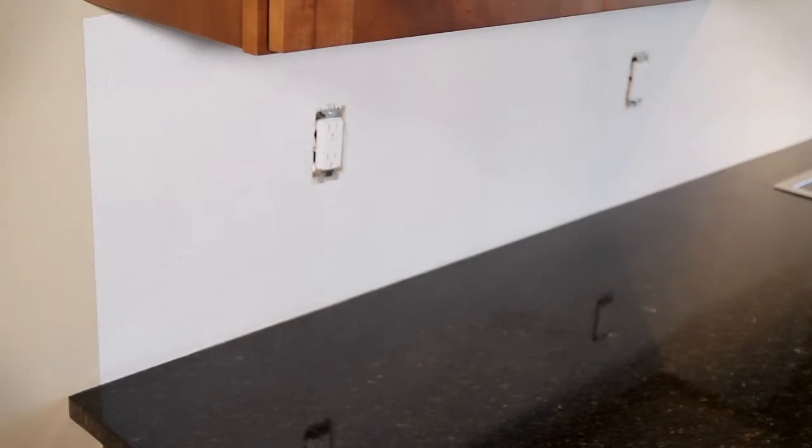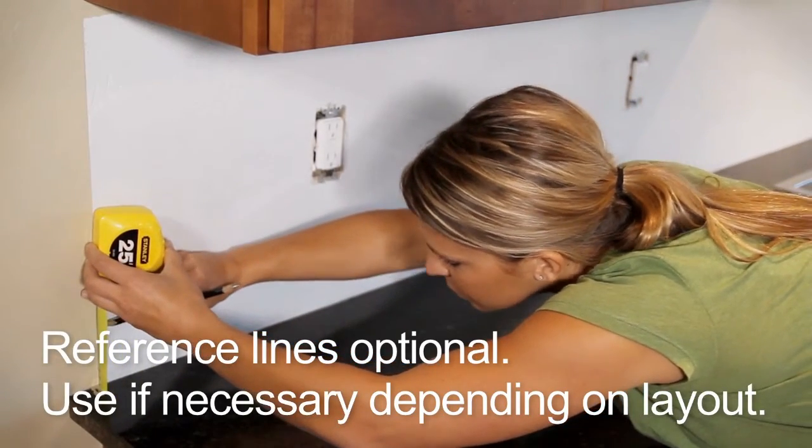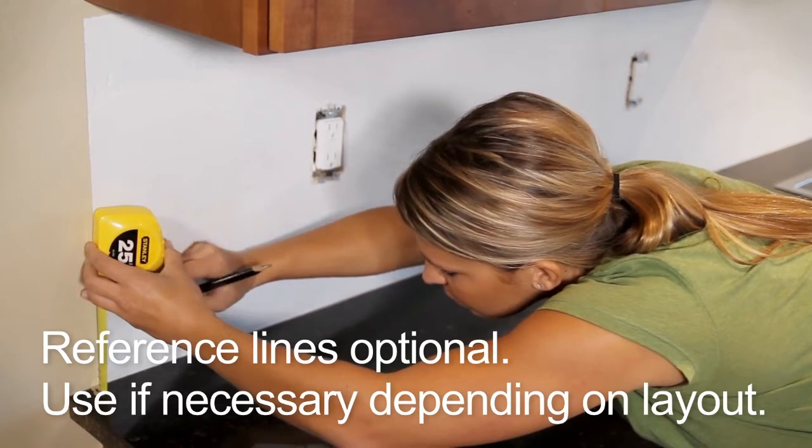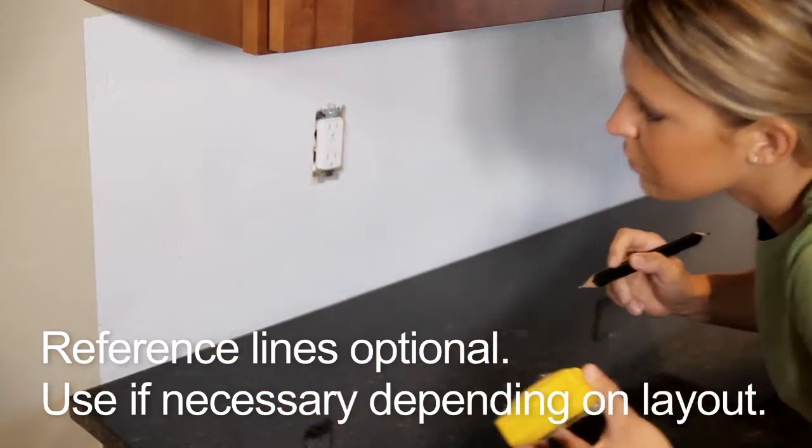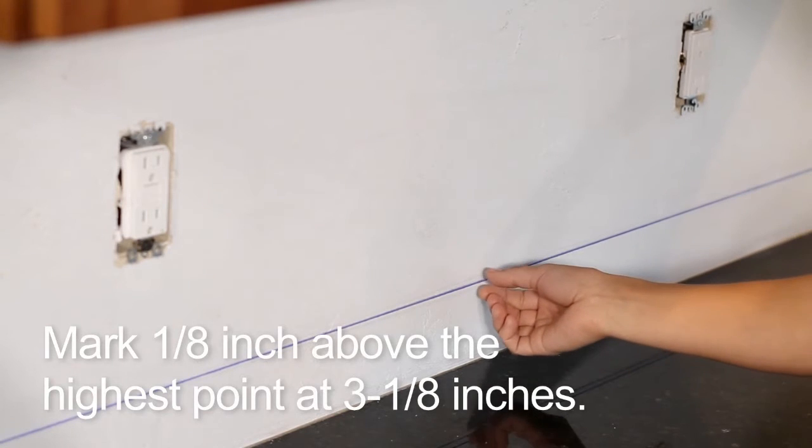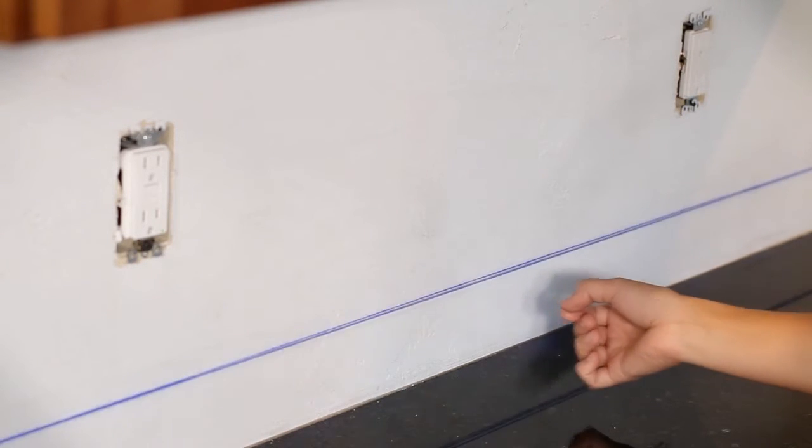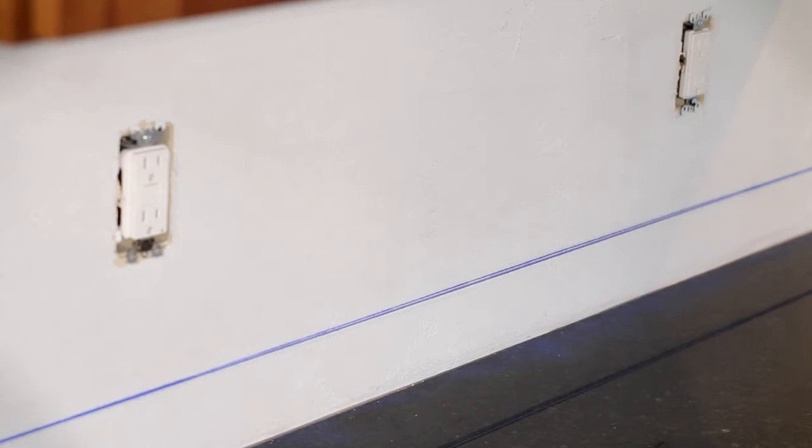If your countertop is perfectly flat, you can start right off the top of the counter. If it has some bumps or is uneven, you should snap a line so your first row is straight. To do this, identify the high points of your countertop by measuring from the horizontal reference line or by using a level. Snap a reference line for the top of the first row of tiles after marking one-eighth inch above the highest point at three and one-eighth inch. The top edge of the first row will be installed along this line.